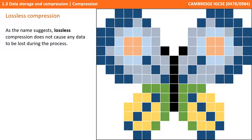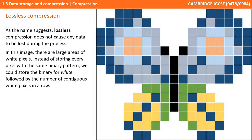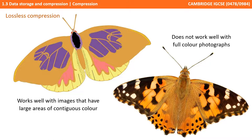Another approach is not to lose any data at all. This is known as lossless compression, and it uses completely different algorithms. For example, in our original image of a butterfly we can see that there are large areas of white pixels. Instead of storing every pixel with the same binary pattern, we could encode our data differently — perhaps by storing the binary for the colour white, and then the number of white pixels in a row before the colour changes. Encoding data in this way would reduce the file size, but would only be effective on images with large areas of continuous similar colours. That makes it suitable for cartoons and clip arts, but ineffective with full colour photographs where there are few blocks of repeating colours.